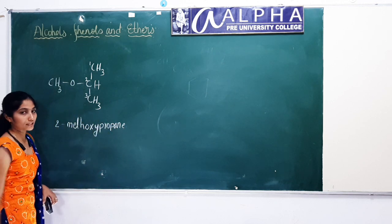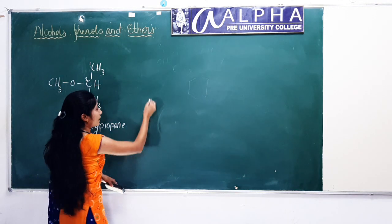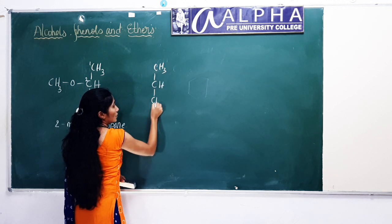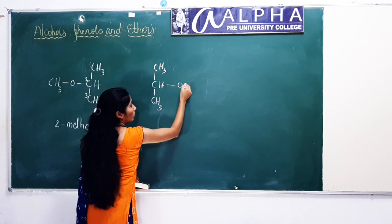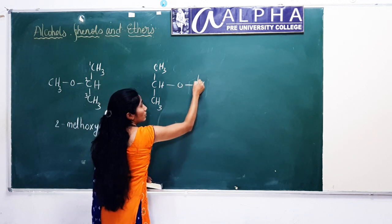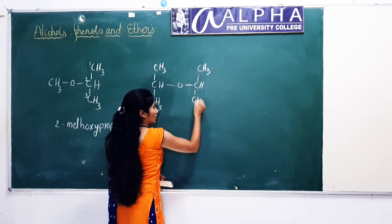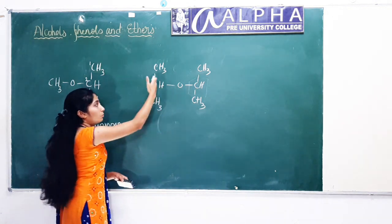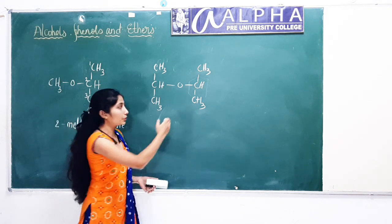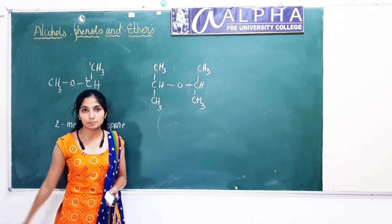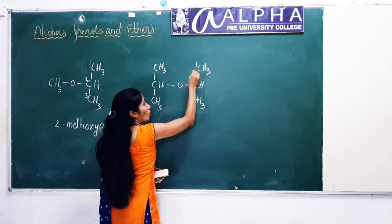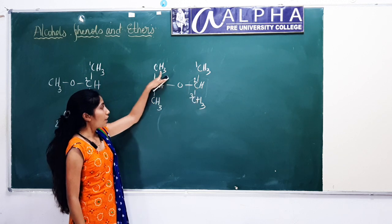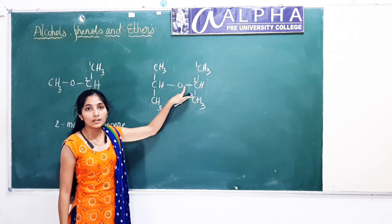This is the IUPAC name of this compound. Let us take another example: CH(CH₃)₂–O–CH(CH₃)₂. How will you name this compound? Both sides contain an equal number of carbon atoms, so you can take any one as the parent chain and number it 1, 2, 3. At the second position, a propoxy group is present.